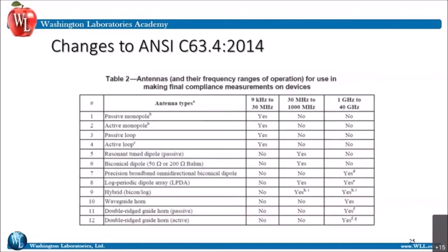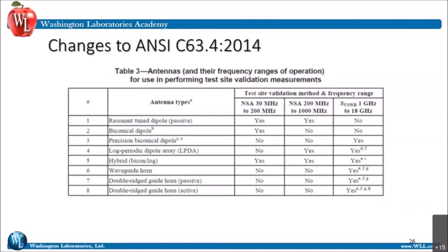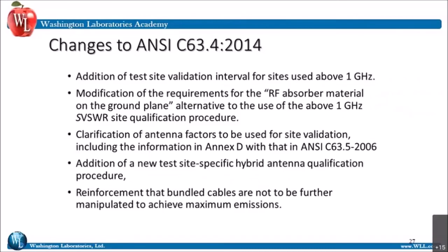Table 2 covers antennas for use in making final measurements — the first table was just for exploratory. They have essentially the same table for final testing and for antennas used in performing site validation measurements. When you do your NSA testing, these are the types of antennas you can use and they want them to be matched — if you've got a log periodic on one side, you can have a log periodic on the other. In addition, there is now test site validation for sites used above one gigahertz. We did not have anything for above one gigahertz validation until C63.4 came out.